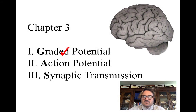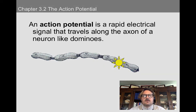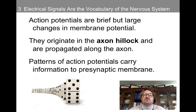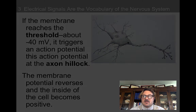Now that we've talked about the graded potential, we're going to talk about the action potential. The action potential is a rapid electrical signal that travels along the axon of a neuron, like dominoes. Action potentials are brief but large changes in membrane potential. They originate in the axon hillock and are propagated along the axon. These patterns of action potential can carry information to presynaptic membranes, which then release neurotransmitters into the synapse.